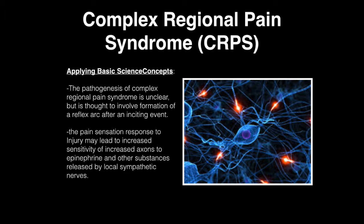Under applying basic science concepts, the pathogenesis of complex regional pain syndrome isn't clear but is thought to involve the formation of a reflex arc after an inciting event. The pain sensation response to injury may lead to increased sensitivity of axons to epinephrine and other substances released by local sympathetic nerves.